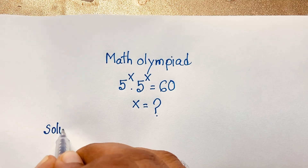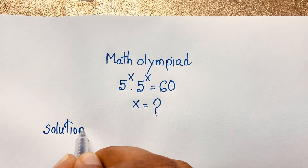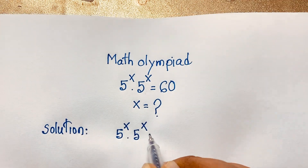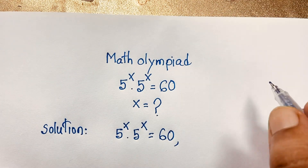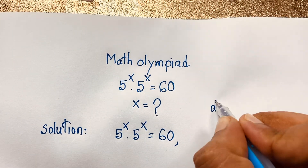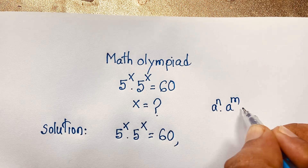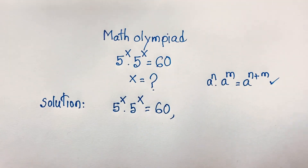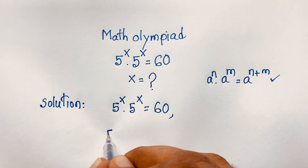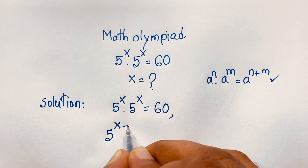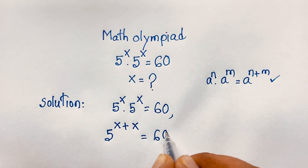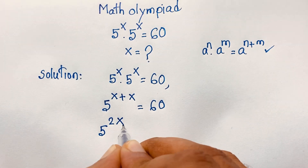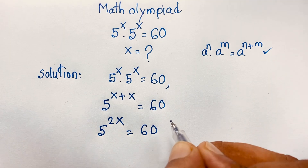Our question is 5 to the power x times 5 to the power x is equal to 60. We know that a to the power n times a to the power m equals a to the power n plus m. Applying this formula, it will be 5 to the power x plus x, which is 5 to the power 2x, is equal to 60.